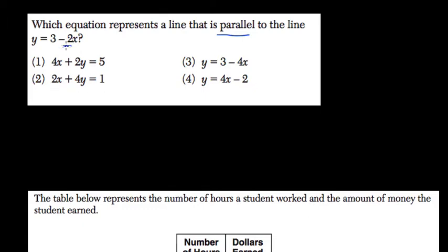Here, the slope is negative 2. Because the slope in this format, mx plus b format, is just the coefficient of the x variable, which is negative 2. So the only other choice here that has a slope of negative 2 will be parallel to this line.